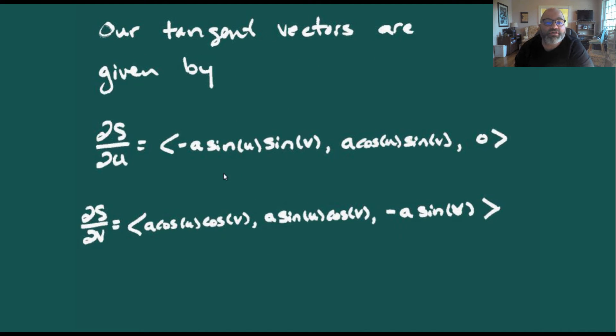Our tangent vectors are the partial derivatives of our parameterization. The partial with respect to u gives us one tangent vector, and the partial with respect to v gives us the second tangent vector.